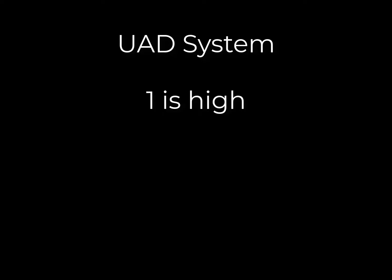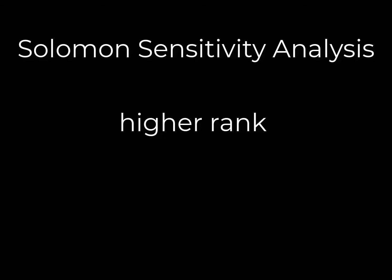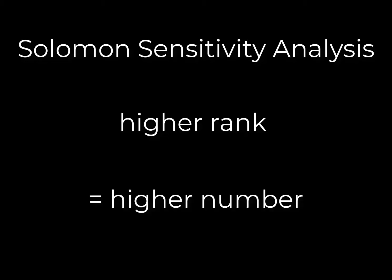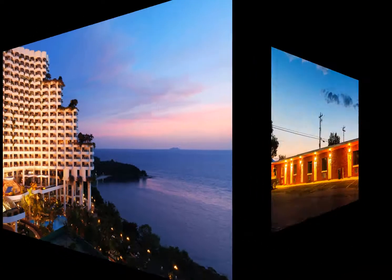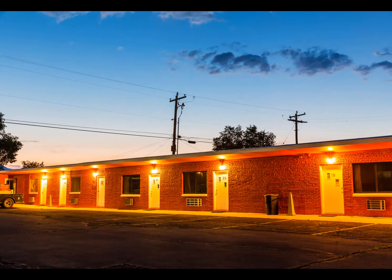Contrary to the UAD system of 1 being high and 6 being low, the Solomon Sensitivity Analysis tool requires a higher rank to have a higher number. Think of it as the way hotels are ranked — five-star hotels are luxurious with every amenity imaginable, while one-star hotels have only the base necessities.